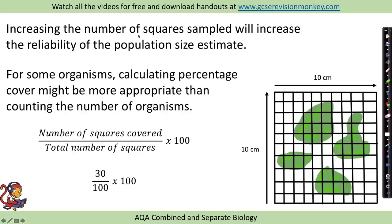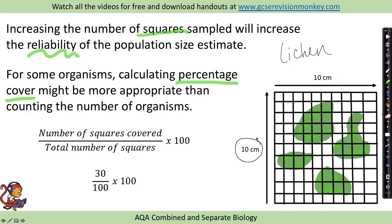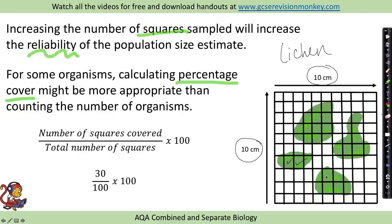A couple of key points: increasing the number of squares sampled will increase the reliability of the population size estimate. They may use the word reliability or accuracy, but the more quadrats you put down, the more reliable your estimate will be. For some organisms, calculating percentage cover might be more appropriate than counting the number of organisms — for example, lichen growing on trees or walls. If you wanted to sample lichen you might use a very small quadrat, such as a 10 by 10 centimeter grid. With lichen you can't see individual organisms, so instead you count the number of squares covered by the lichen.